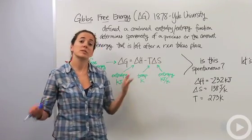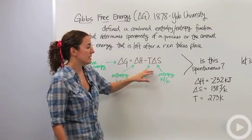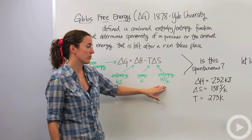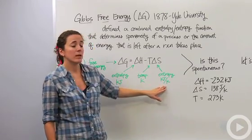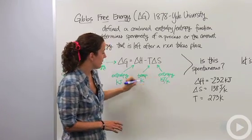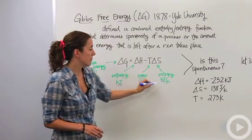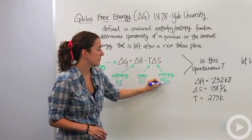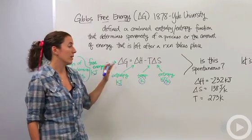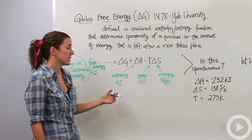Entropy is a measurement of disorder — how chaotic or messy something is. It is typically measured in kilojoules per Kelvin. All units must match before we can do the mathematical equation and get the correct answer.